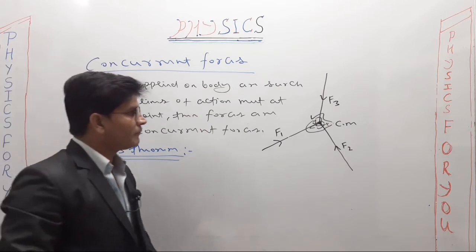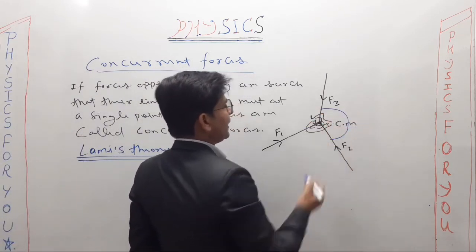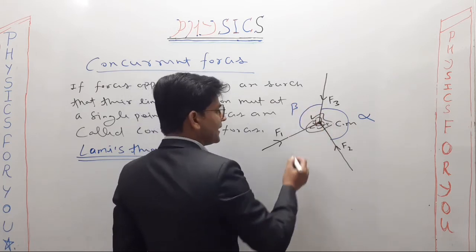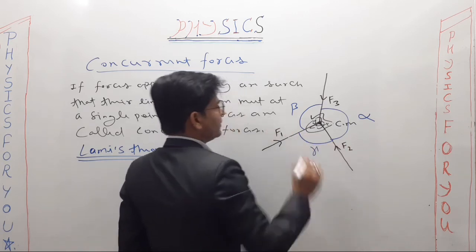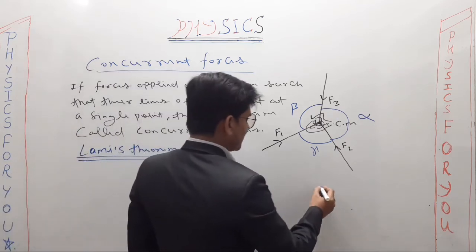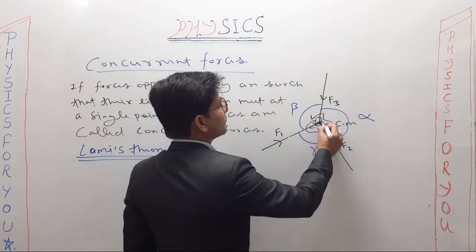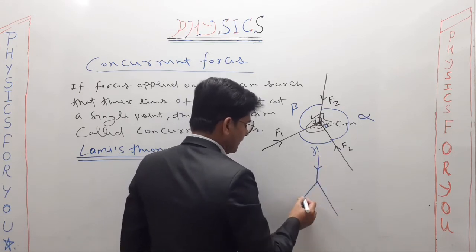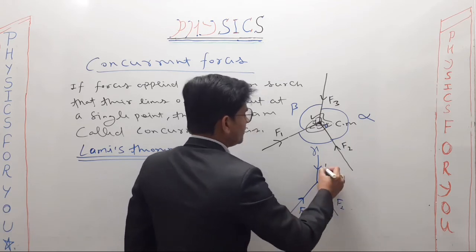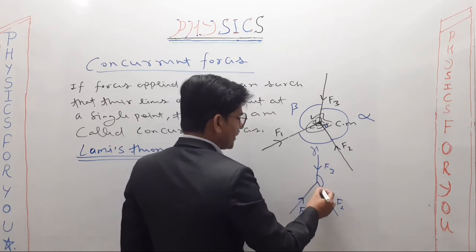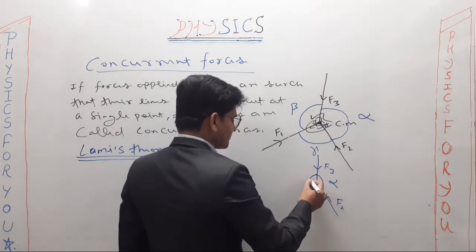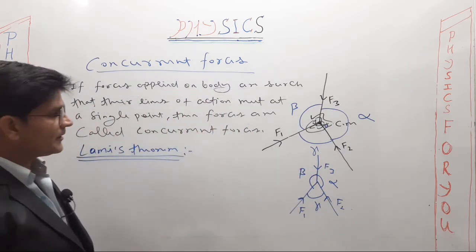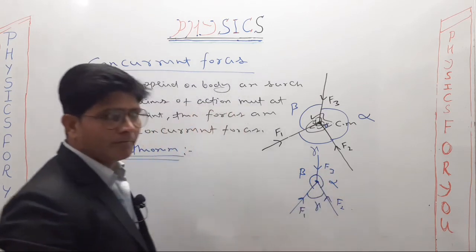Let's assume from the same diagram: let the angle between forces F2 and F3 be alpha, the angle between F3 and F1 be beta, and the angle between F1 and F2 be gamma. If we represent the lines of action — the point where they meet is the center of mass — then we have F1 in one direction, F2 in another, and F3 in a third direction. The angle assumed here is alpha, this angle is beta, and this angle is gamma. This is what our theorem is related to.